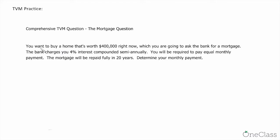The question is, you want to buy a home that's worth $400,000 right now, which you're going to ask the bank for a mortgage. The bank charges you 4% interest compounded semi-annually, you will be required to pay an equal monthly payment. The mortgage will be repaid in 20 years. Determine your monthly payment.